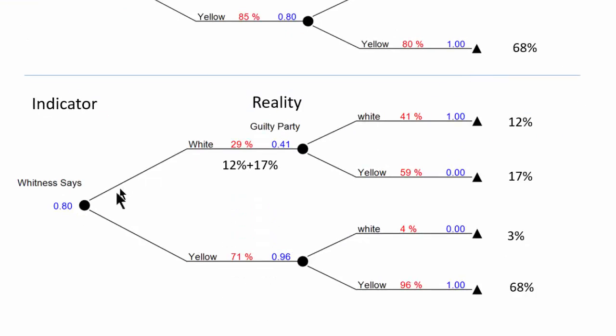The probability of the witness saying white is the probability of these two numbers. These have to add back to here. So 12 plus 17. Similarly on the bottom branch it's 3 plus 68.